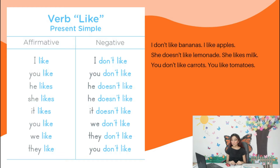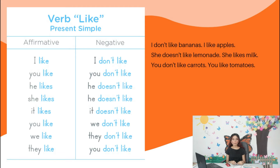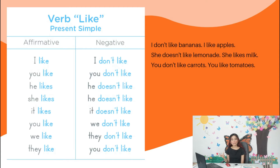First of all, we're going to do a review about the activities that we did yesterday. As you can see, we started doing a review about the verb 'like' in present simple. Remember that this unit is all about present simple and food — healthy food.